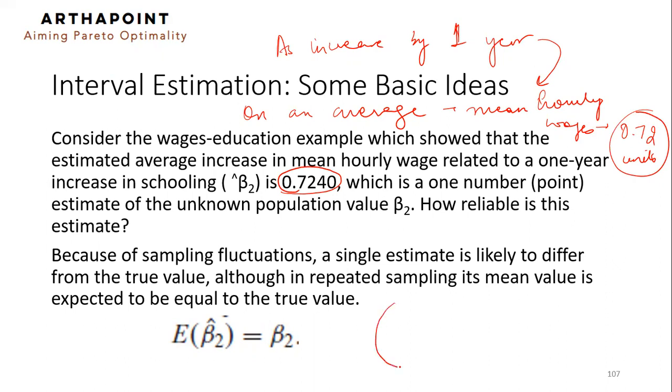Let's say that this is a population that I'm talking about. I want to understand from this data of the population as to what happens to the income of an individual when he increases his years of schooling. But the problem here is that we cannot deal with population. So I go ahead, I pick up a sample from that and I calculate beta 2 hat. This beta 2 hat represents what would be the increase in mean hourly wages. But this is only based on a sample.